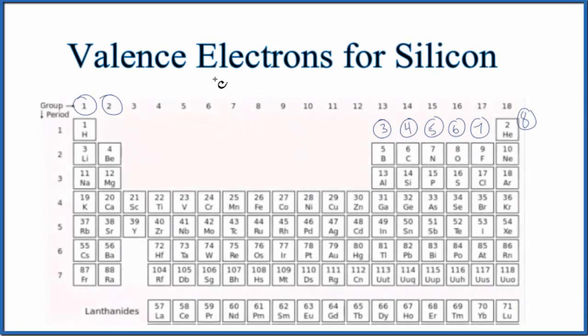In this video we'll determine the number of valence electrons for silicon, Si. The first way we can figure out the number of electrons in the valence shell for silicon is just look it up on the periodic table. So here it is, it's in group 14, sometimes called 4A.